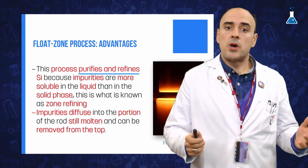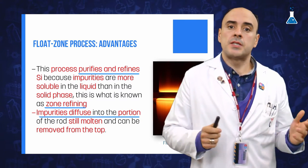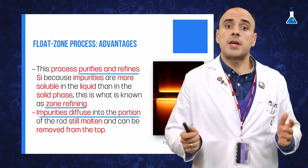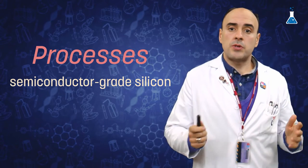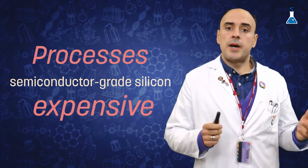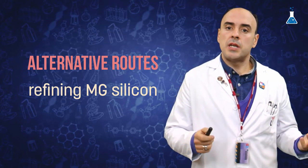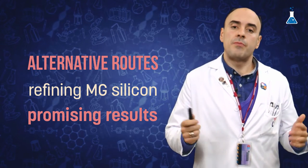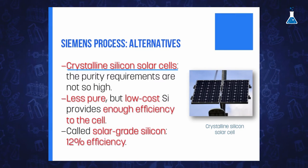This is what is commonly known as zone refining. As the heater moves, the impurities diffuse into the portion of the rod that is still molten, and once the entire rod has passed through the coil, impurities can be removed from the bottom of the rod. It is important to note that these processes for obtaining semiconductor grade silicon, such as the Siemens process, are quite expensive and high energy demanding. Therefore, there are alternative routes for refining MG silicon that show promising results for some applications which can tolerate a higher amount of impurities. For example, for some crystalline silicon solar cells for which the purity requirements are not so high, a lower purity but also lower cost silicon can be employed.